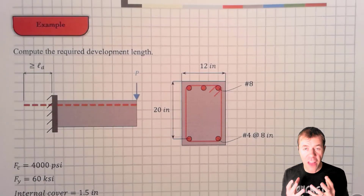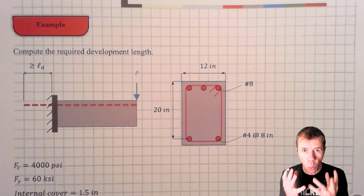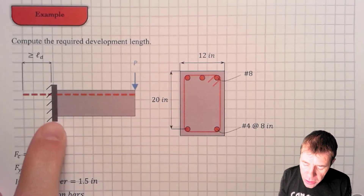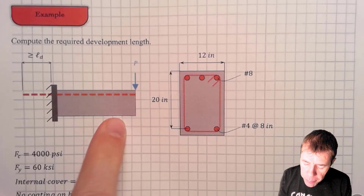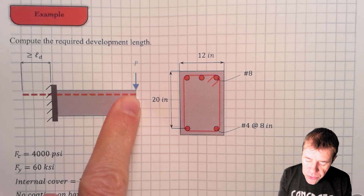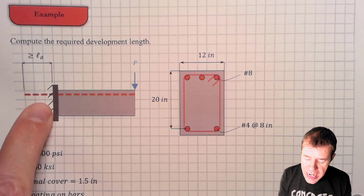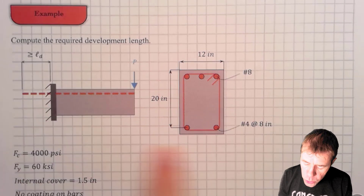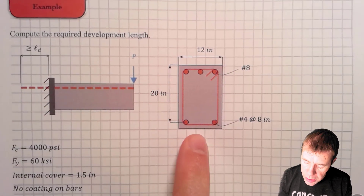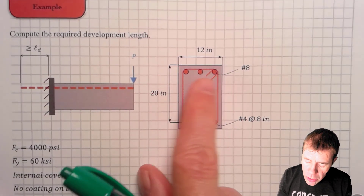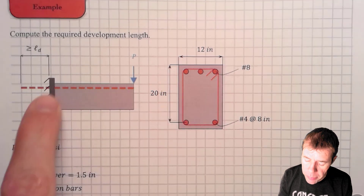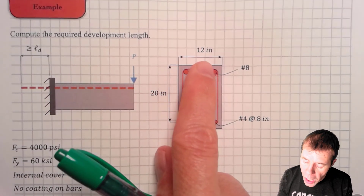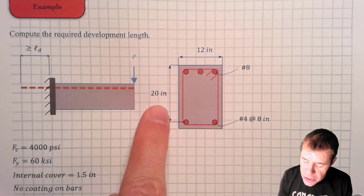Computing development length is actually not that hard once you figure it out. We're going to work on a problem where we have a cantilever beam with a point load on the end. This dimension into the wall — that's what we're designing. That is the development length. Here's what the cross-section looks like. We're using number 8 bars as longitudinal bars at the top, because that's where the tension is. It's 12 inches wide and 20 inches deep.